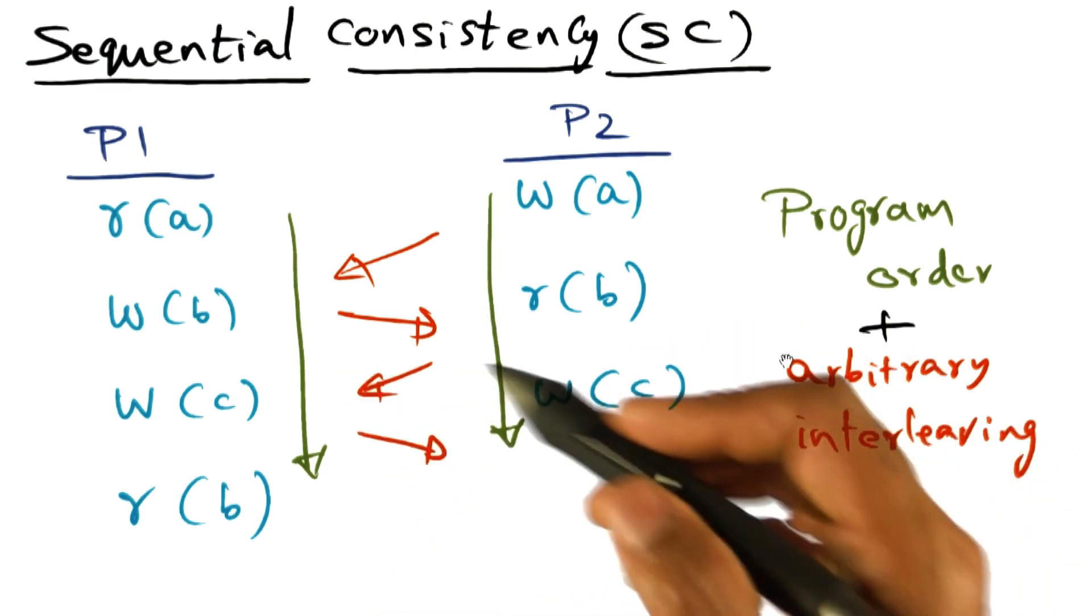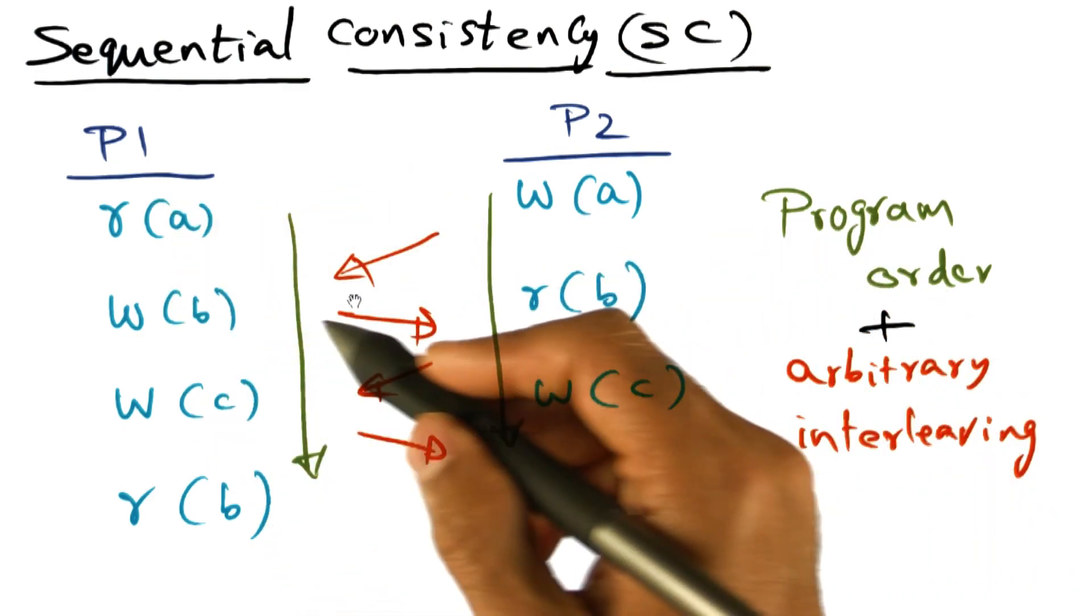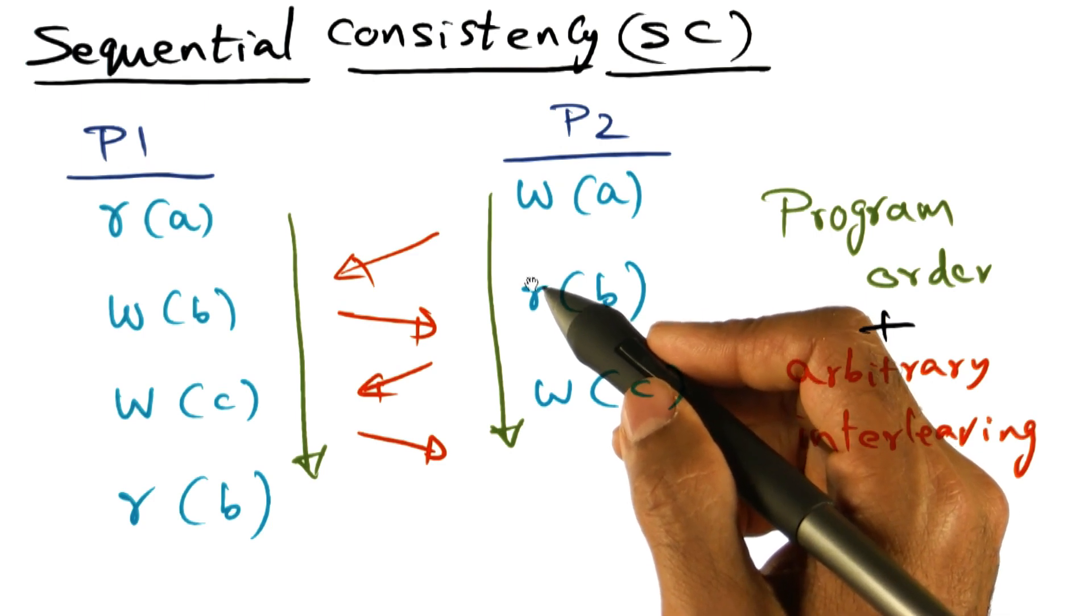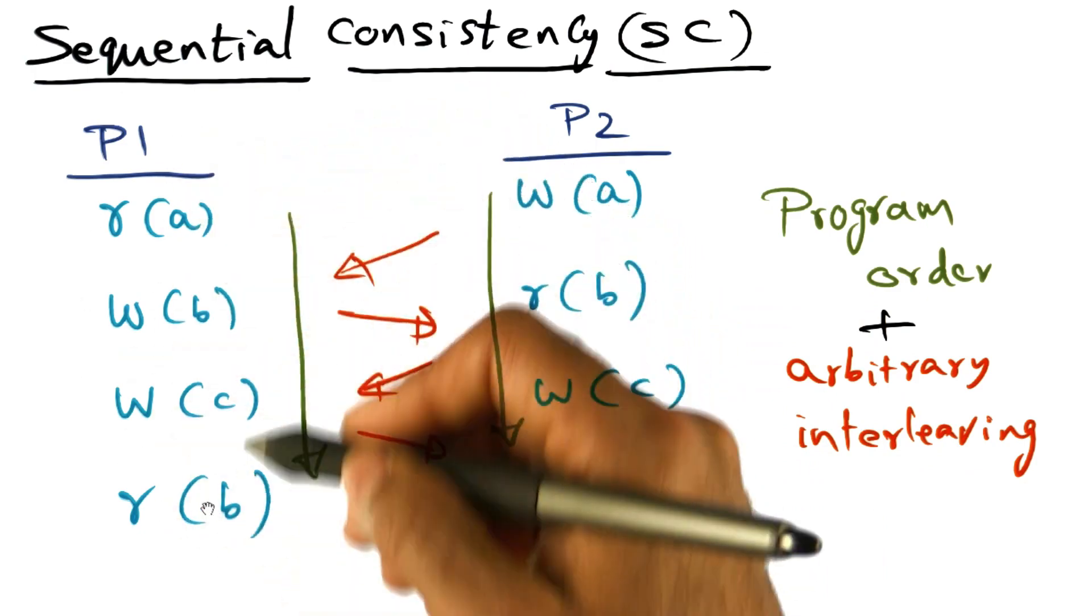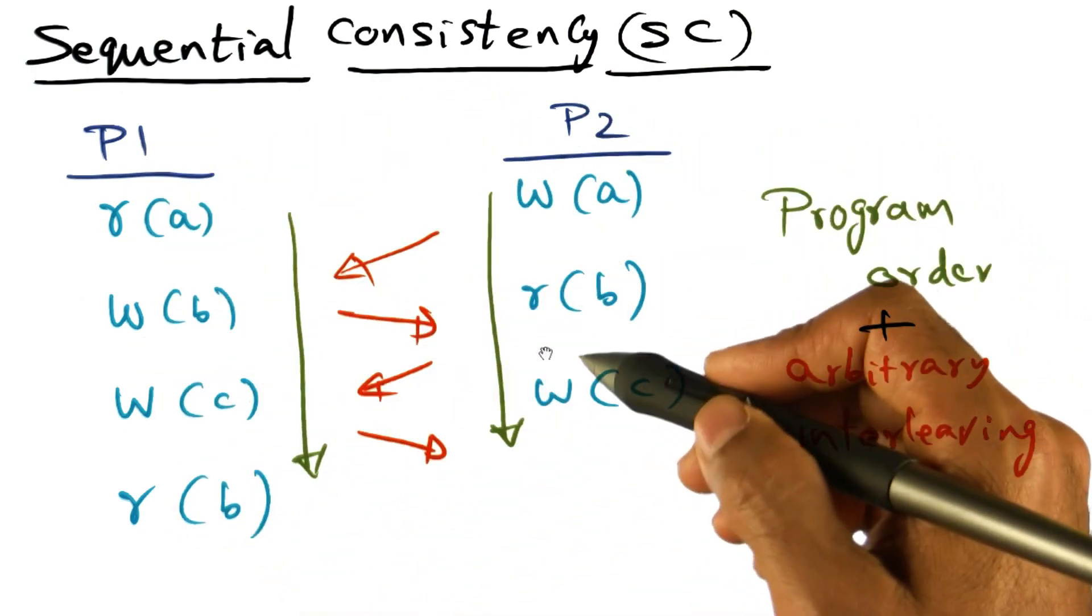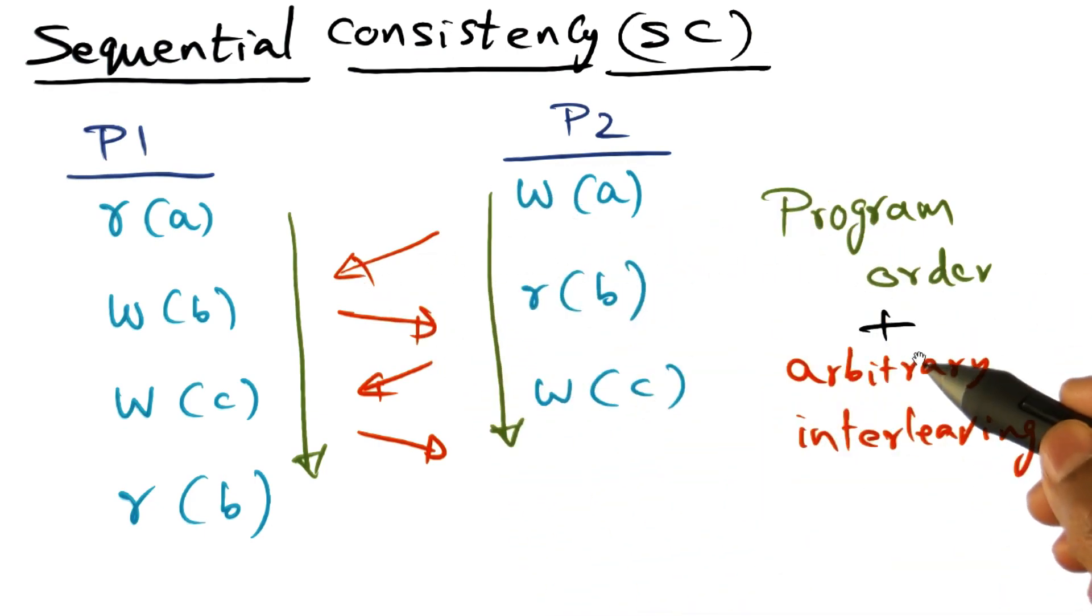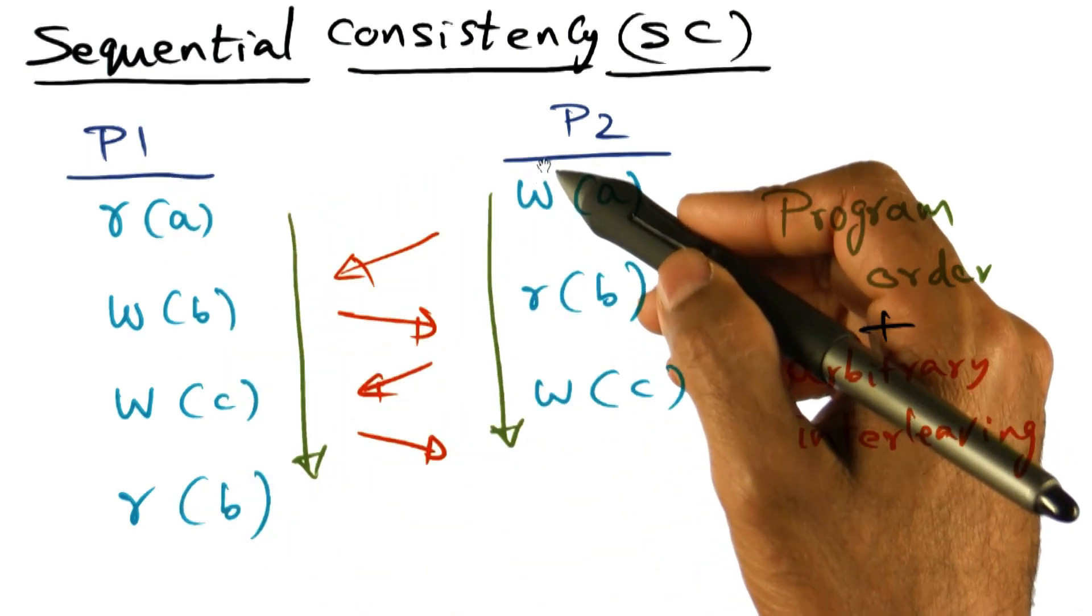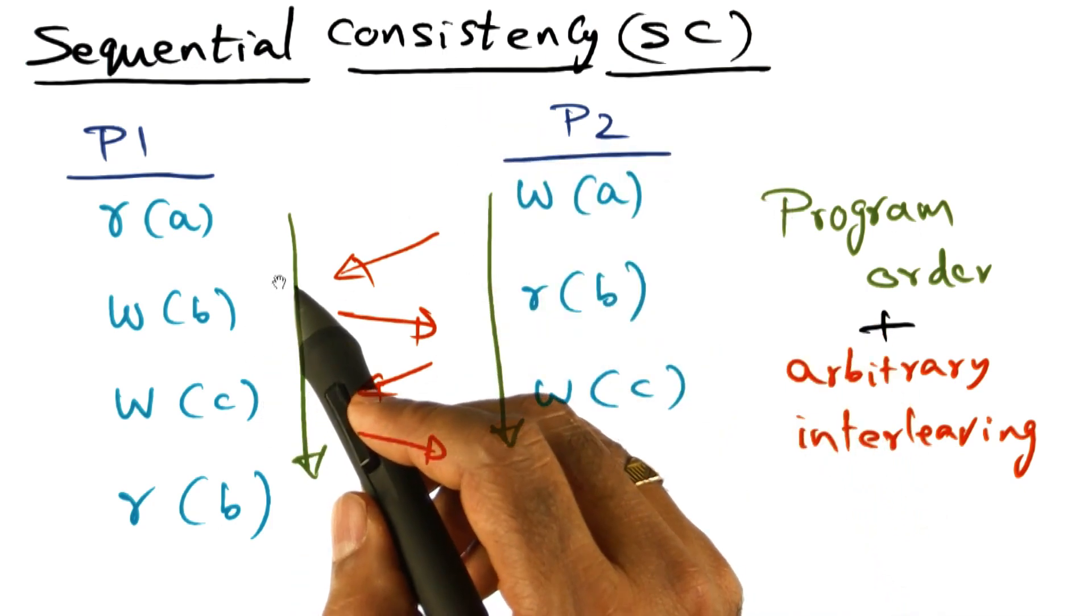And in addition to that, there is this interleaving of memory accesses between P1 and P2. And this is where we have no way of controlling the order in which these accesses are going to be satisfied by the memory because it depends on the execution of P1 on processor P1 and the execution on P2 and how they reach memory. And so this interleaving can be arbitrary. That is, the interleaving between accesses that you see here and the accesses that you see here can be arbitrary. So that's the sequential consistency memory model.